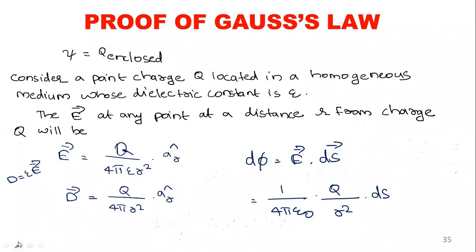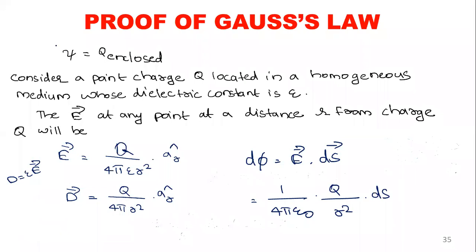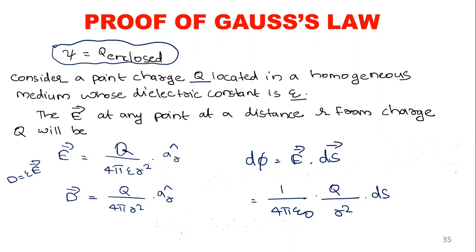Coming to the proof of Gauss's law: Gauss's law means the total flux involved is equal to the total charge enclosed. We will consider a point charge Q located in a homogeneous medium whose dielectric constant is epsilon. The electric field at any point at distance r from the charge Q is to be calculated. The electric field intensity is equal to one over four pi epsilon zero (or epsilon) into Q over r squared into a-hat-r, where a-hat-r is the radius vector showing the direction of the electric field.